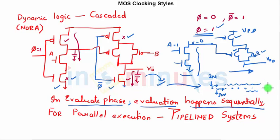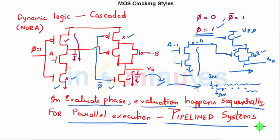To avoid this sequential delay problem, we use pipeline systems, where all blocks can work in parallel. This improves the throughput of the system and the rate at which outputs are produced. Stay tuned for further clips, and thank you very much.